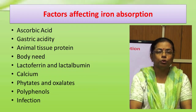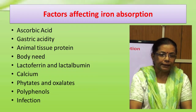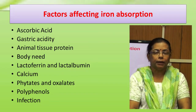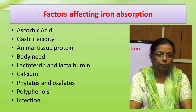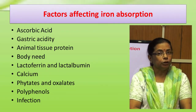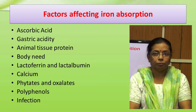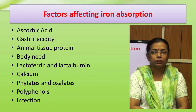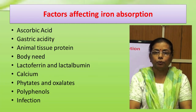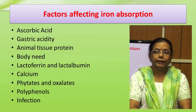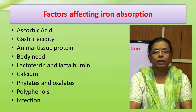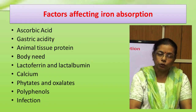Factors that inhibit iron absorption include: phytates found in cereals, bran, and some legumes, which bind iron and make it unavailable; oxalates found in green leafy vegetables, tea, cocoa, and coffee, which also bind iron; polyphenols, which are organic compounds found in some fruits and vegetables that form insoluble complexes; and certain infections, which also reduce iron uptake.